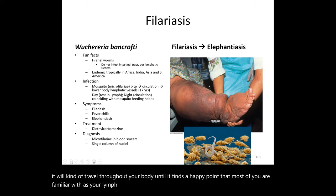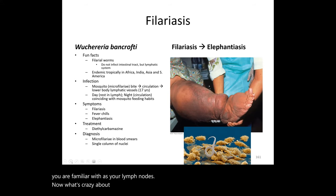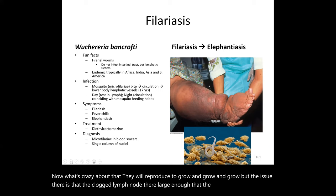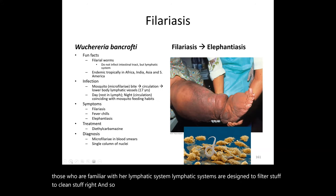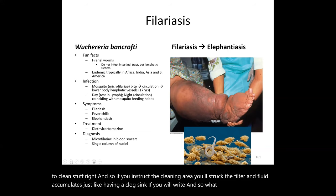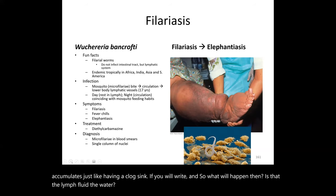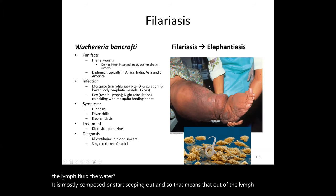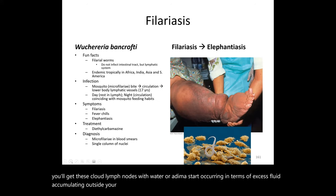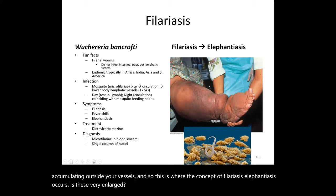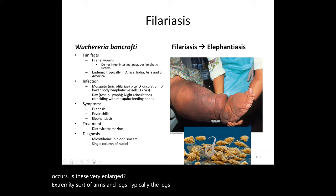The worms reproduce and grow inside the lymph nodes, clogging them and preventing filtration. Your lymphatic system is designed to filter and clean — if you obstruct that, fluid accumulates, like a clogged sink. The lymph fluid, which is mostly water, starts seeping out of the clogged lymph nodes, causing edema — excess fluid accumulating outside the vessels. This is where elephantiasis occurs: very enlarged extremities, typically the legs, where fluid accumulates over years.